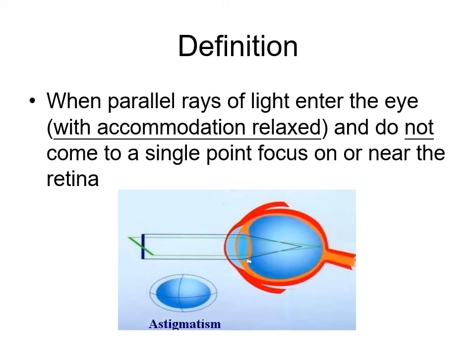The definition of astigmatism is when parallel rays of light coming from infinity enter the eye with accommodation relaxed but do not come to a single point — that is 'a-stigma,' meaning no point. So there is no single point focus, but there will be formation of a line.